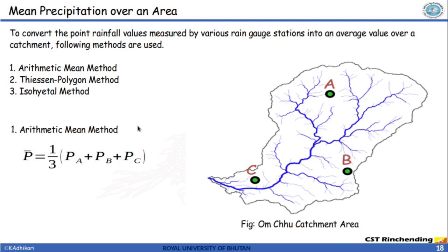Now let's discuss methods to find mean precipitation over an area. There are three methods: arithmetic mean method, Thiessen polygon method, and isohyetal method. The arithmetic mean method simply averages all station values within the catchment — precipitation at A plus B plus C divided by 3. This method is very rudimentary; it is recommended to use a better method such as the Thiessen polygon or isohyetal method when available.